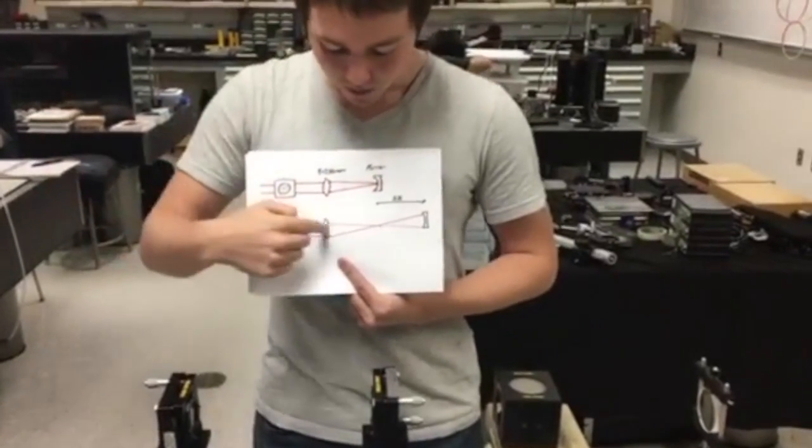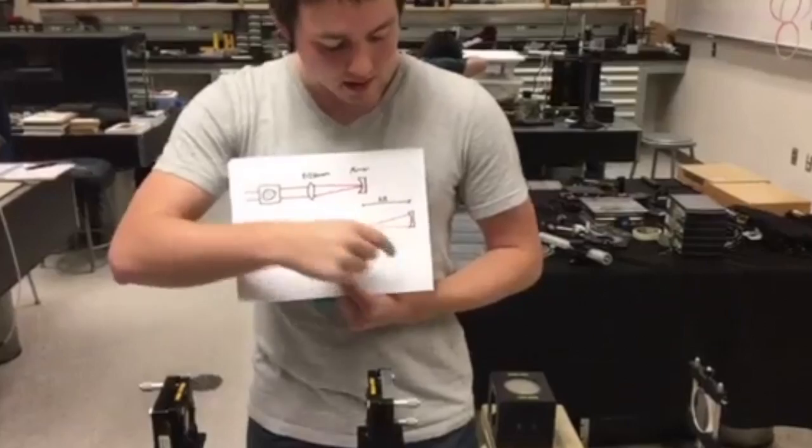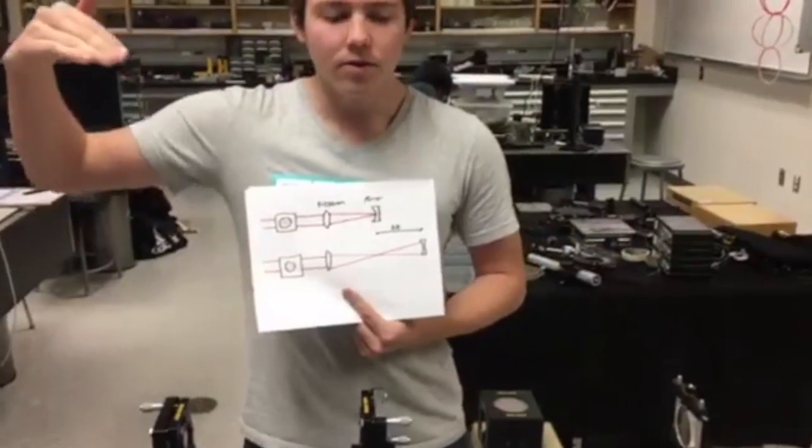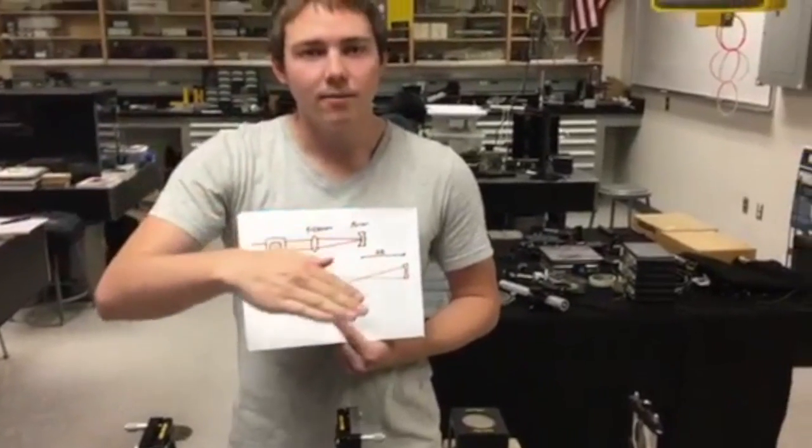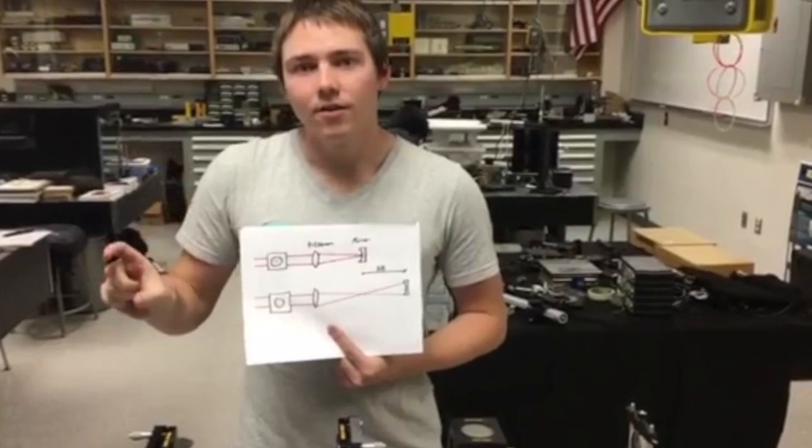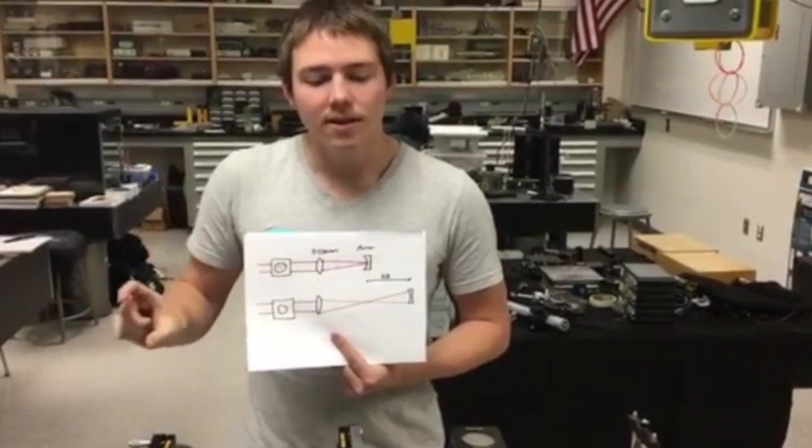Also, when you go past focus and the mirror radius of curvature matches the beam radius of curvature, then the beams will reflect directly back on themselves. At that point, you know what your radius of curvature of the mirror is if you know what the beam is.